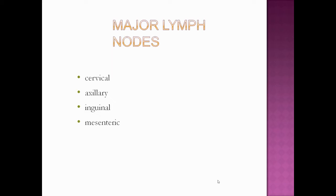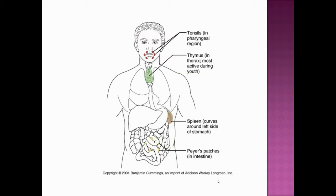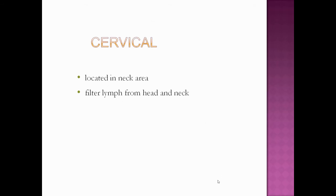Today we will discuss all the major lymph nodes present in our body in detail. We can see in this picture the presence of some lymphatic nodes. First, the cervical lymph node is located in the area of the neck, and it filters lymph from the head and neck region.